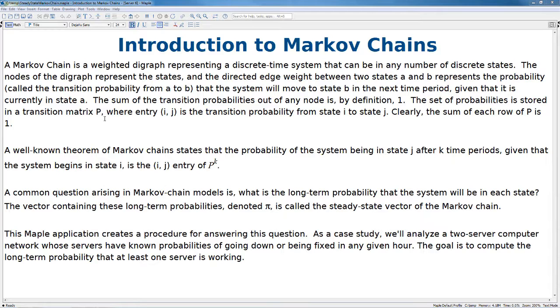This Maple application creates a procedure for answering this question. As a case study, we'll analyze a two-server computer network whose servers have known probabilities of going down or being fixed in any given hour. The goal is to compute the long-term probability that at least one server is working.